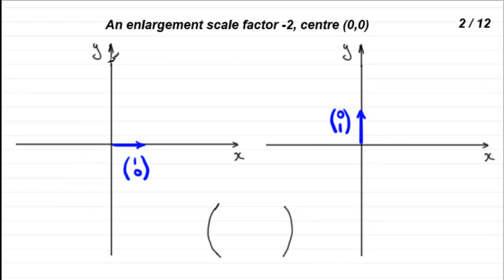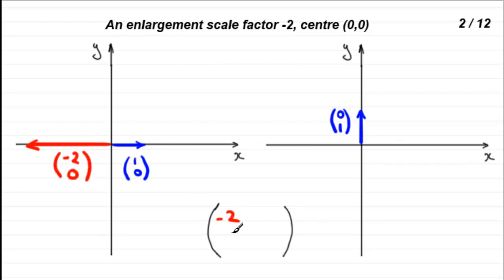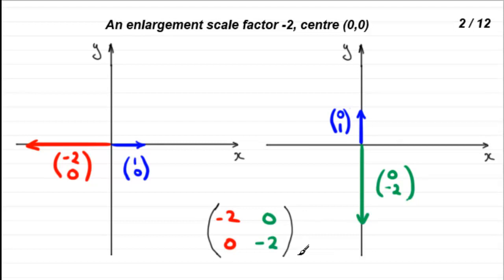Next is an enlargement, scale factor minus 2, centre 0, 0. Each unit base vector is projected back through the origin by 2 units — the minus 2 tells us they're projected back. So (1, 0) goes to (−2, 0), and (0, 1) projected back through the origin goes to (0, −2). The matrix has columns (−2, 0) and (0, −2).